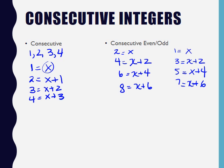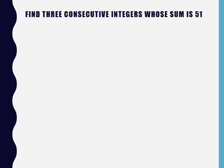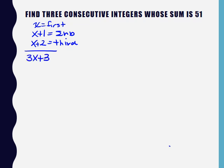So I want to find three consecutive integers whose sum is 51. So X would be my first, X plus 1 would be my second, and X plus 2 would be my third. It really helps you to write this down because sometimes these can get complicated. If I add that up, because it's sum, I'm going to get 3X plus 3, and then we set it equal to 51.